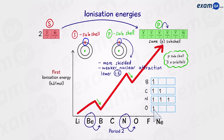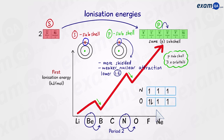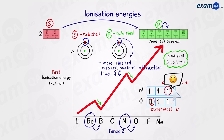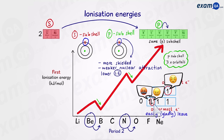Oxygen has four electrons in the P subshell. When the fourth electron arrives, all three orbitals already contain an electron, so it has to share an orbital with another electron. The outermost electron in nitrogen is comfortable — it's alone in its own orbital. The outermost electron in oxygen, however, is not comfortable because it's sharing an orbital with another electron that repels it. So if these outermost electrons had the option to leave, the one in oxygen would be far more inclined to leave, requiring less energy. That's why there's a drop in oxygen's first ionization energy compared to nitrogen.